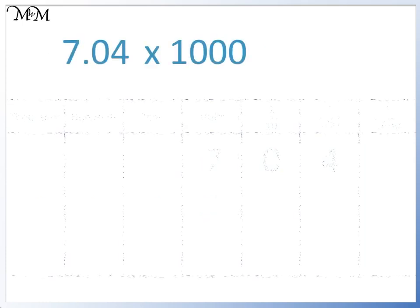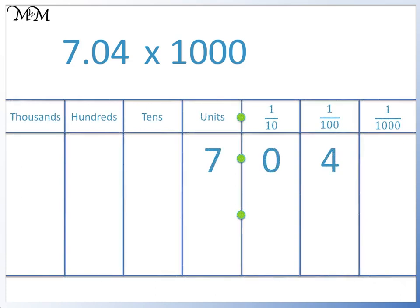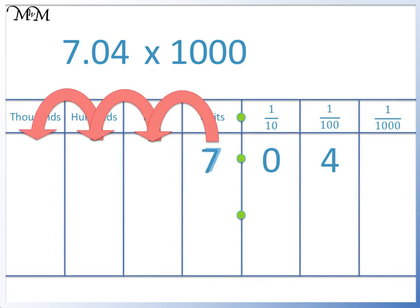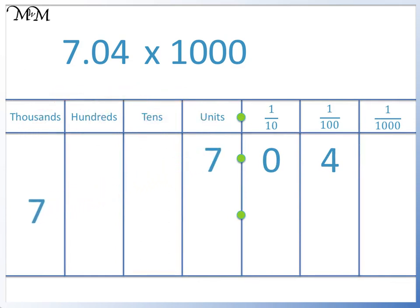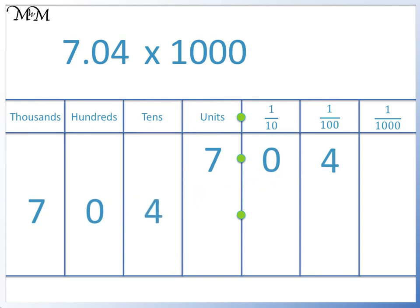7.04 times 1000. We will start by moving the 7 three places to the left, followed by the 0, and finally the 4. It is important that we keep the 0 that is between the 7 and the 4. There is a space in the units column, so we write in a 0. 7.04 times 1000 equals 7040.